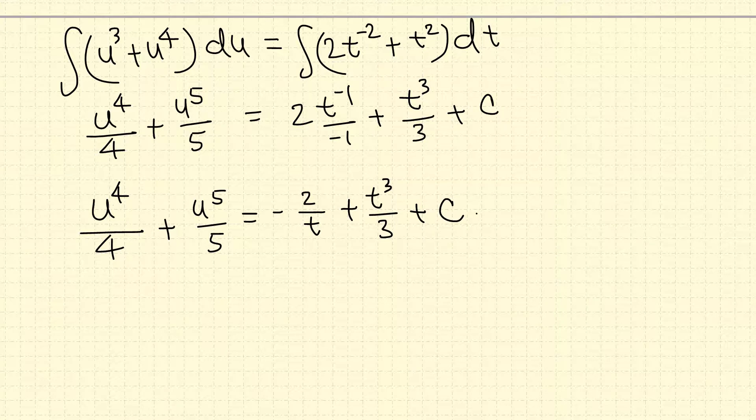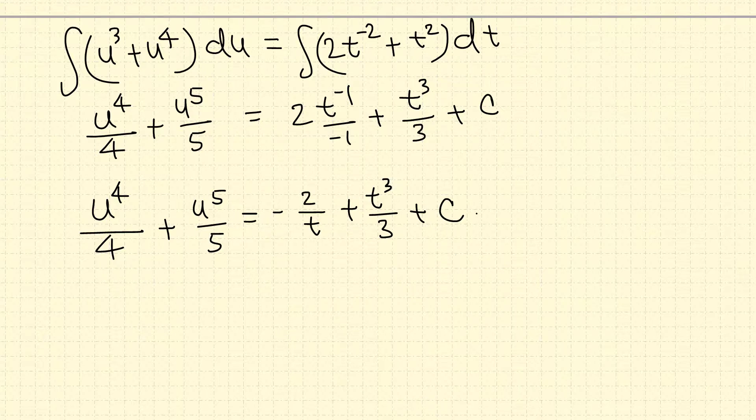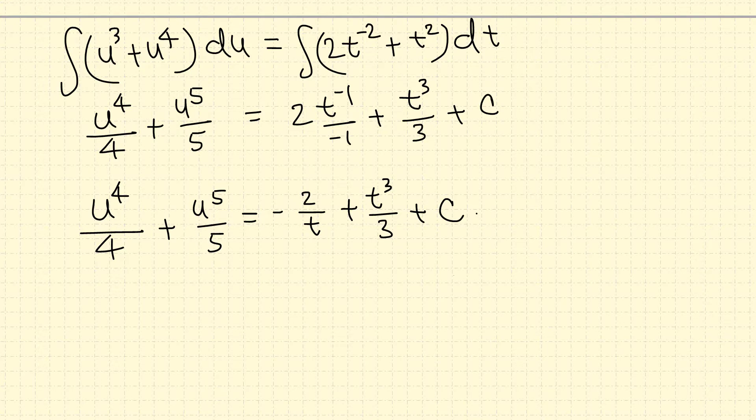u is the dependent variable here but we cannot solve for u. It's complicated because of u^4, u^5, so we may leave this as it is. The solution is given implicitly.